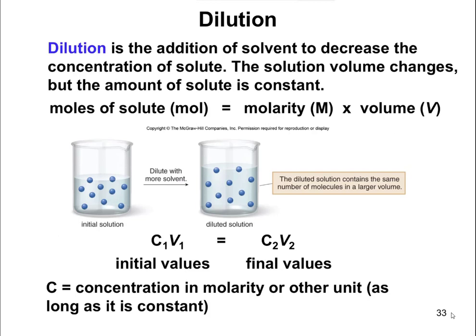There's one important equation that helps you figure all of this out. The equation you're going to need is C1V1 = C2V2, where C represents concentration and V represents volume. So the initial concentration times the initial volume equals the final concentration times the final volume. The unit for concentration doesn't matter as long as it stays the same, and the unit for volume doesn't matter as long as it's the same between the two. You can use milliliters or liters, and concentration can be in molarity, parts per million, or weight-volume percent, as long as it's consistent.